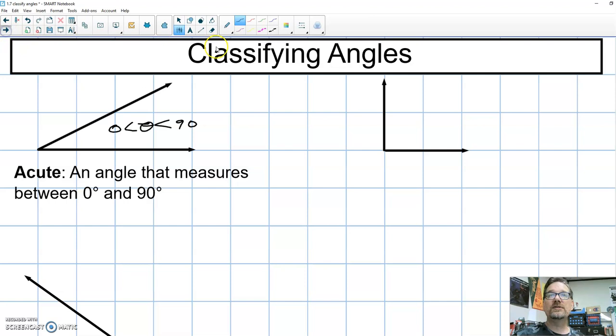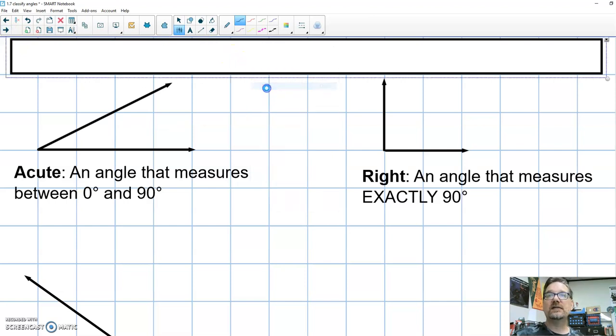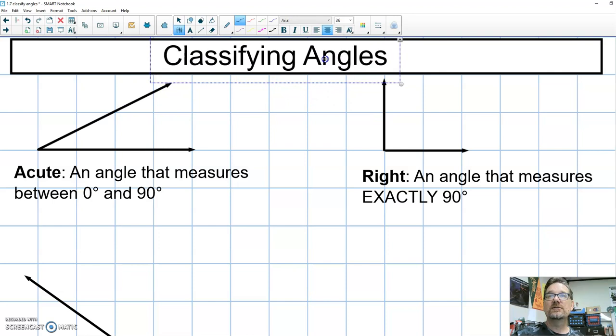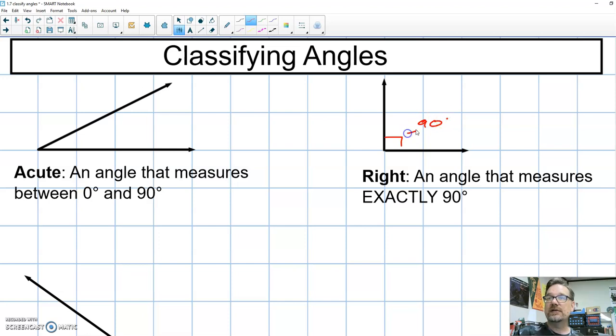Our next type of angle is a right angle. A right angle measures exactly 90 degrees. So I'm sorry, I'm putting the names up here as I go. An angle that measures exactly 90 degrees is a right angle. To show that this is a right angle, I put a box in the corner and that box means 90 degrees.